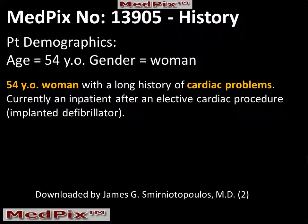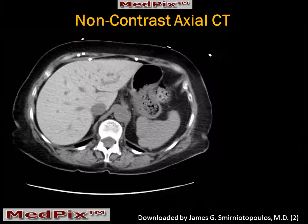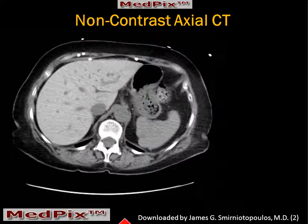This week's patient is a 54-year-old woman with a long history of cardiac problems. She's currently an inpatient after the elective placement of an implanted defibrillator. A CT scan was ordered after the procedure because of decreasing hemoglobin and hematocrit.